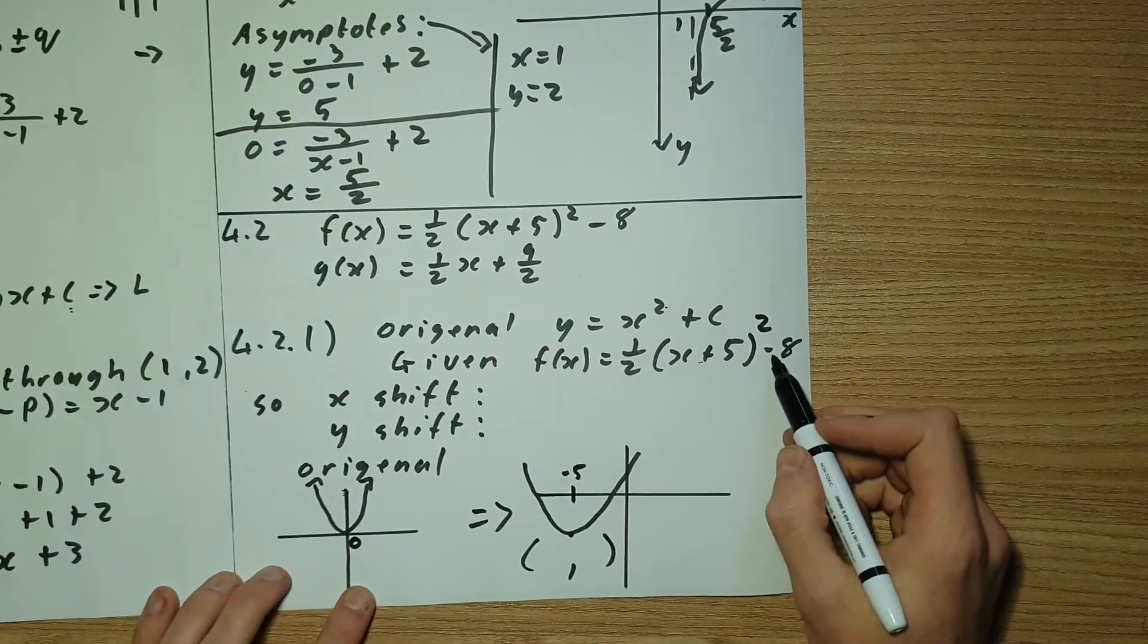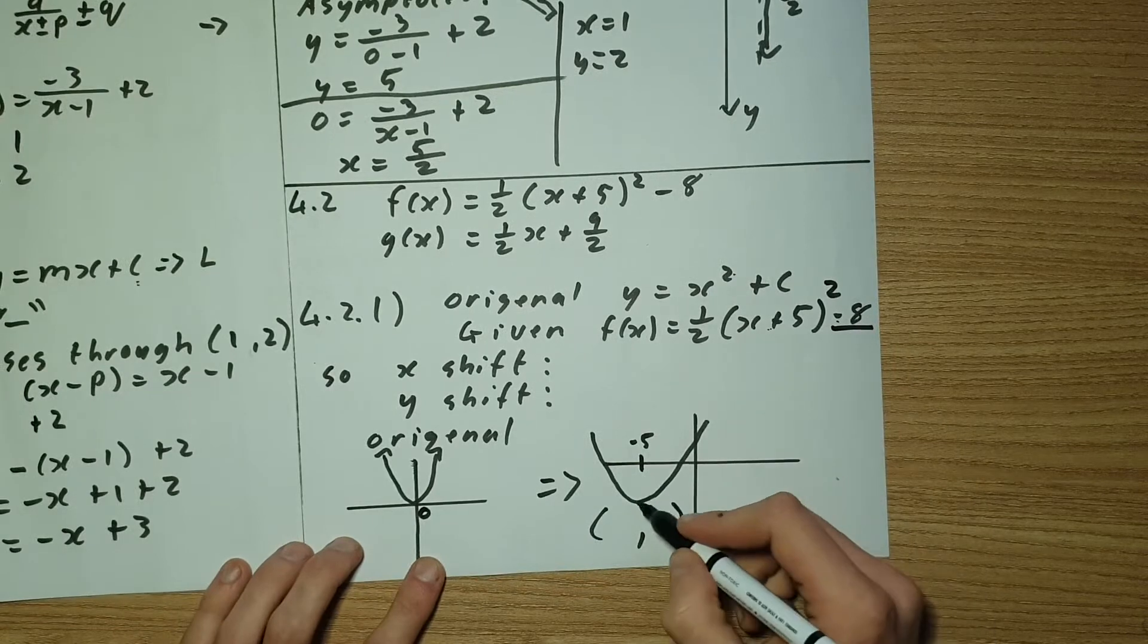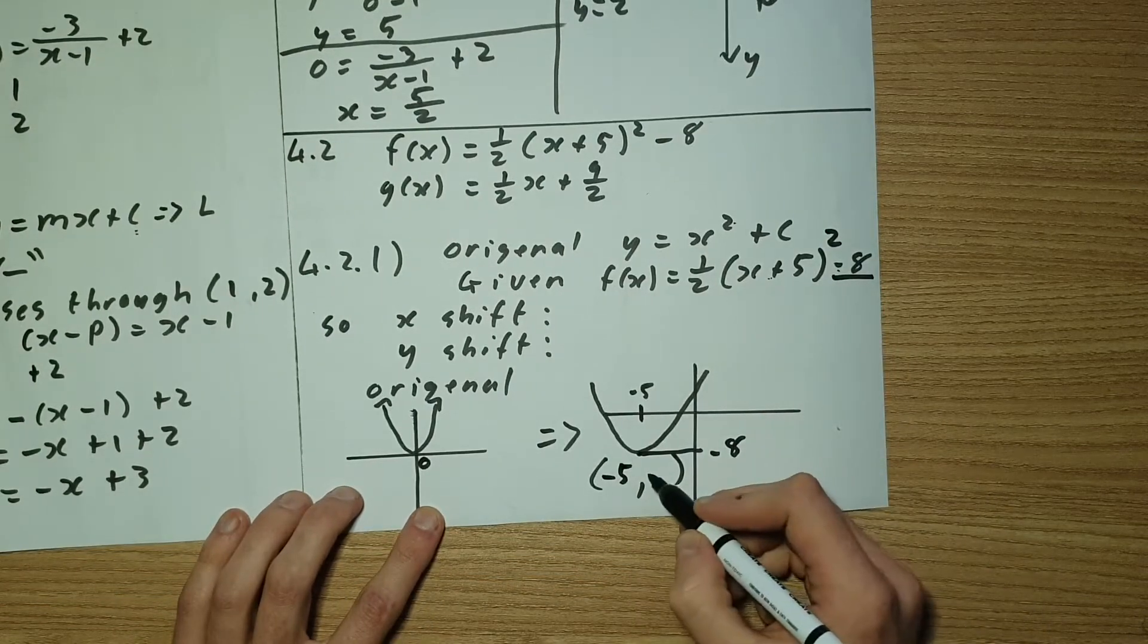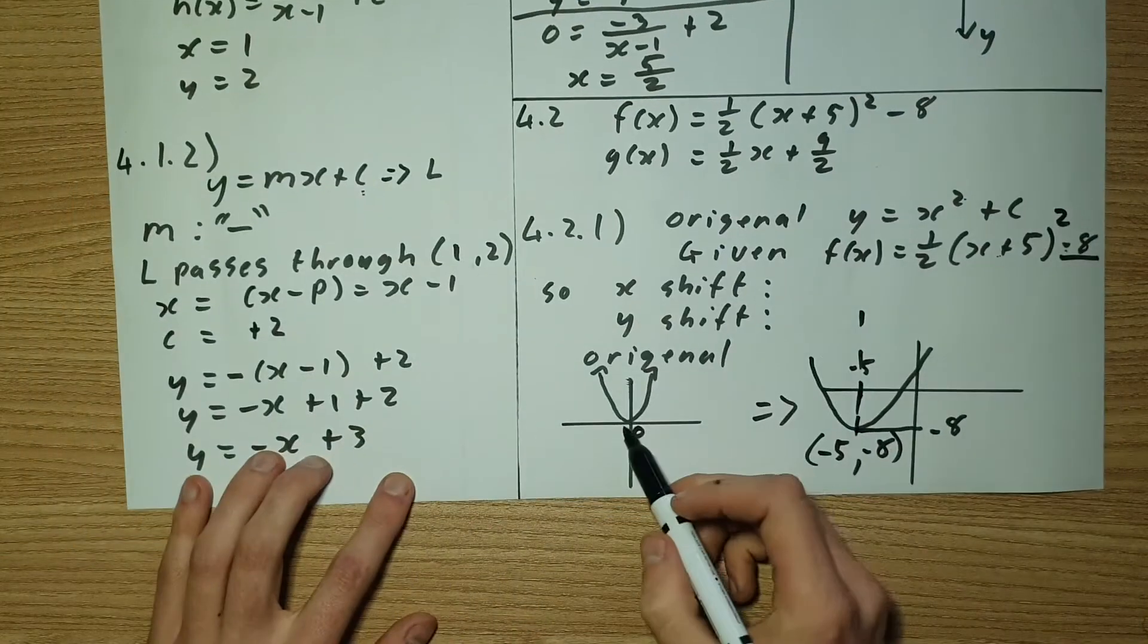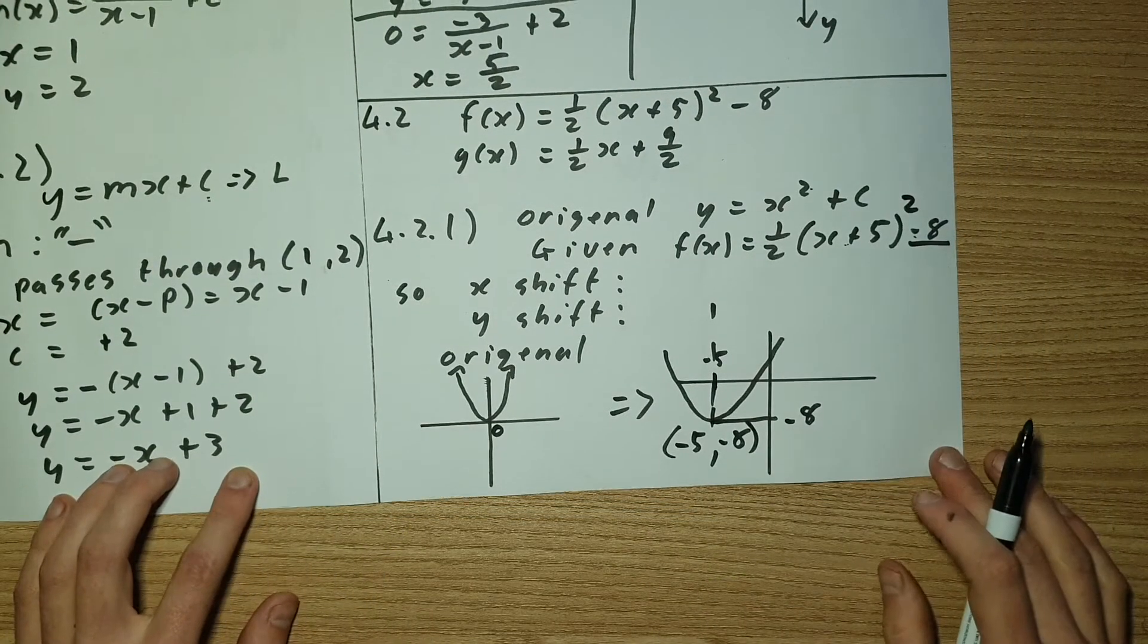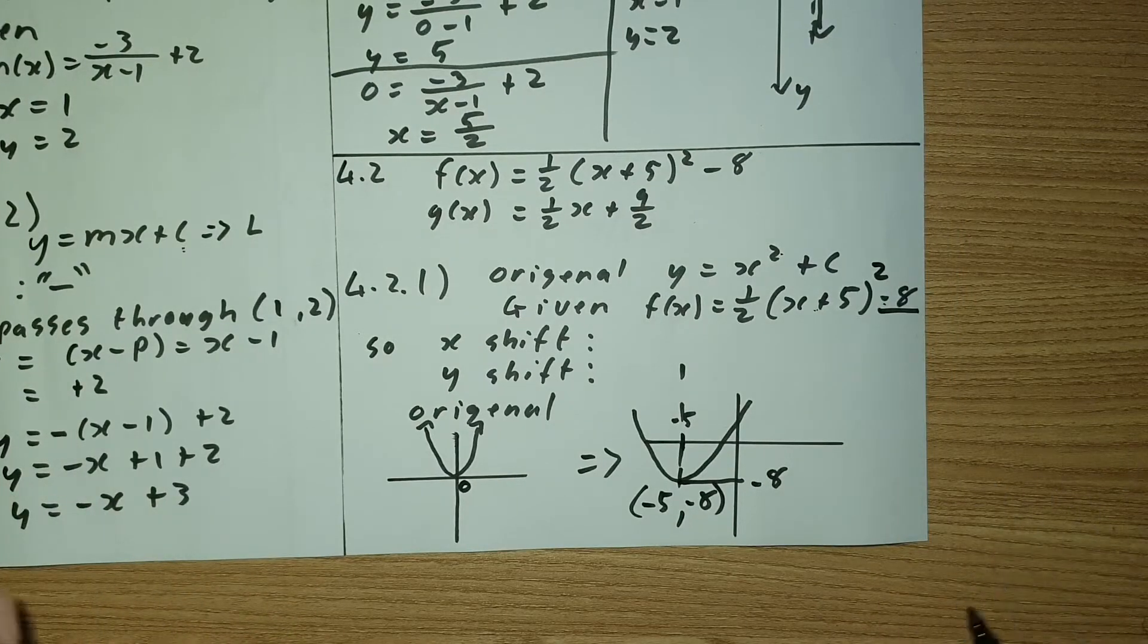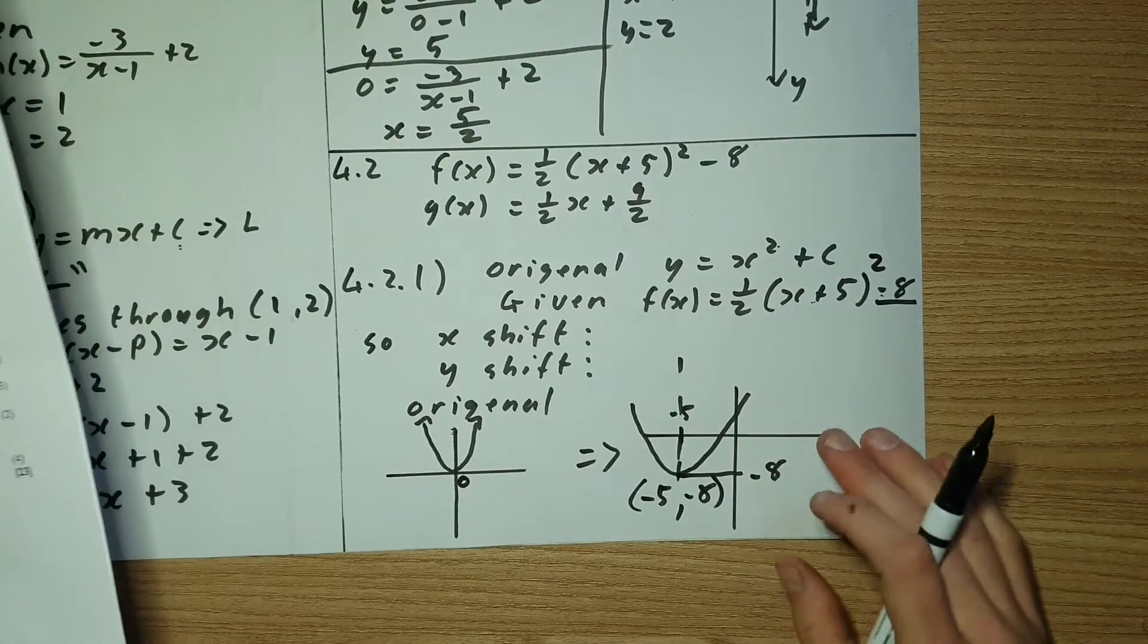Plus, we've shifted the graph down by 8 units. So this over here is now negative 8. I'm at negative 5 and negative 8. Originally, I was sitting at 0, 0. So my new turning point becomes negative 5 and negative 8. So just some basics from grade 10 and 11 that we have to incorporate. And it's worth two marks. So not too many calculations.